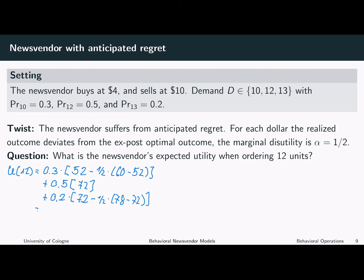So what we have here is 0.3 times 52 minus 1.5 times 60 minus 52, which is minus 4, plus 0.5 times 72 minus 0.5 times 78 minus 72, which is just minus 3. If we plug it in, we find that the expected utility of this newsvendor is just 64.2.